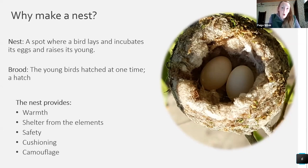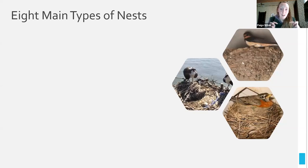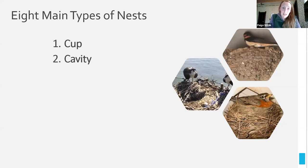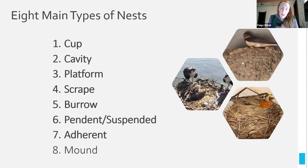Now I'm going to cover the eight main types of nests. It's worth prefacing this by saying many birds don't really like to fit into the categories we try to put their nests in, but this is our best way of grouping them. The types we'll cover are: cup nests, cavity nests, platform, scrape, burrow, pendant and suspended nests, adherent, and mound nests. Mound nests we won't cover in as much depth — a mound is basically a pile on the ground where birds put their eggs.